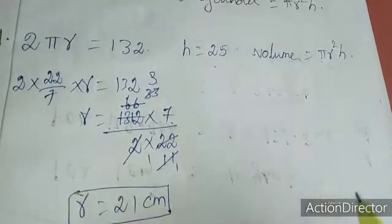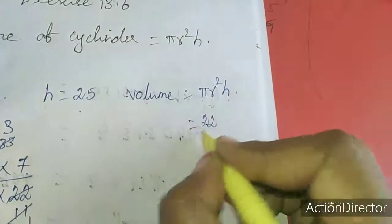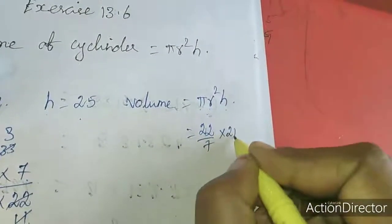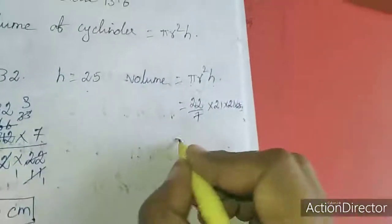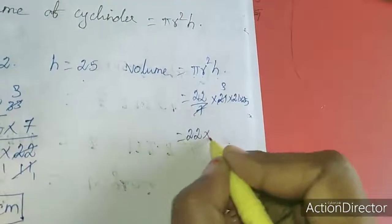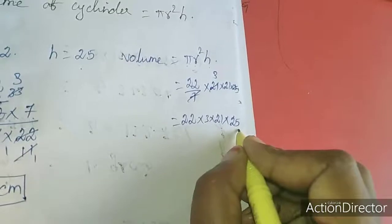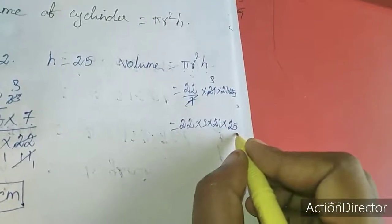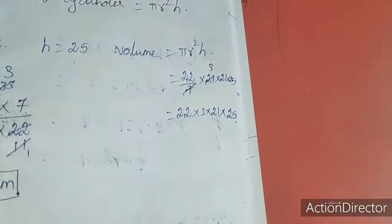Now we calculate the volume. Pi r squared h equals 22 by 7 times 21 times 21 times 25, which is 22 times 3 times 21 times 25. This is homework for you.